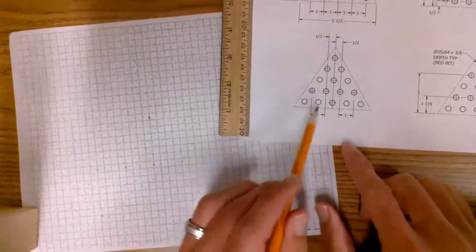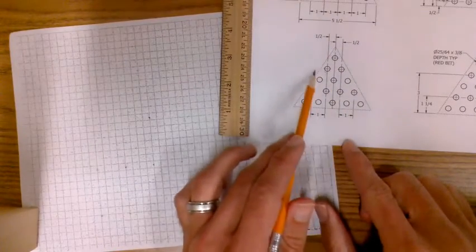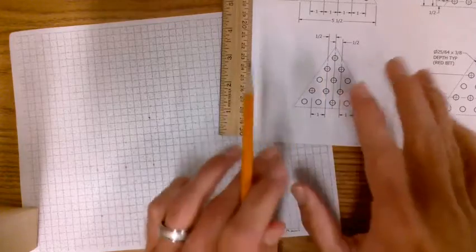All right, so here's how we're going to do the next two rows. We're going to do this one and this one. All right, just stay with me on this.